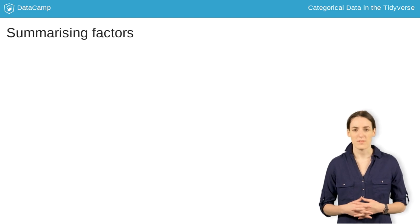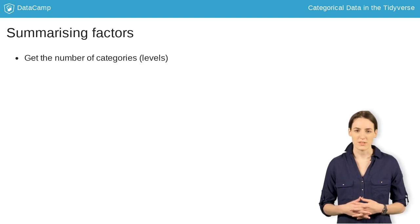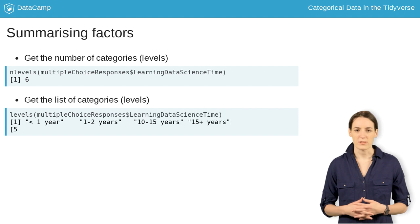Once our columns are factors, we want to find out more about each one. We can use two functions: nlevels and levels. Nlevels will give us the number of levels of a factor, and levels will give us their names.